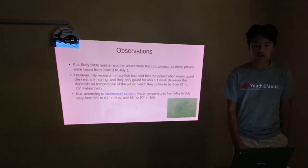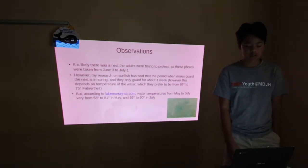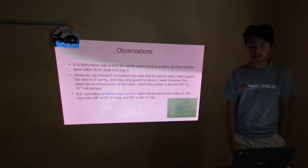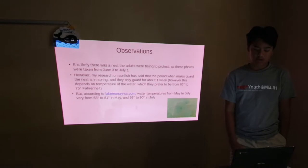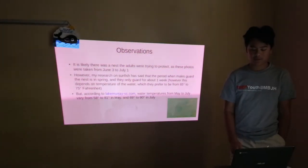According to LakeMurraySC.com, water temperatures in May to July vary from 58 to 81 degrees in May and 69 to 90 degrees in July. So while this is not the exact temperature they prefer, most of the temperatures they like are within both of these ranges.